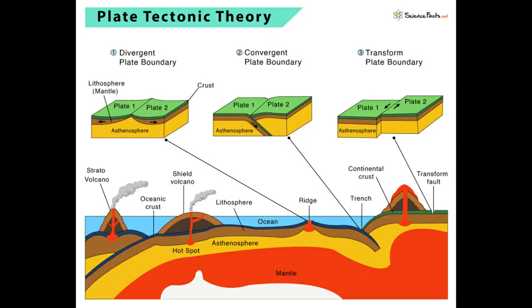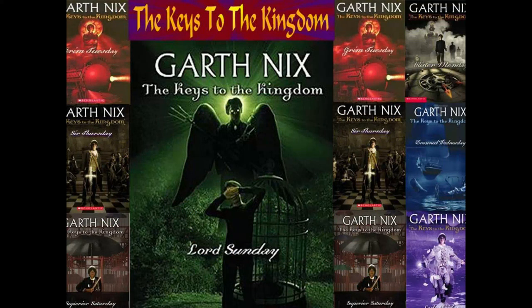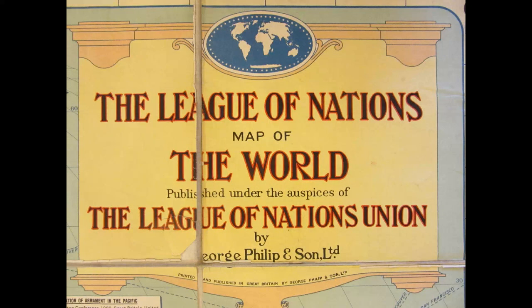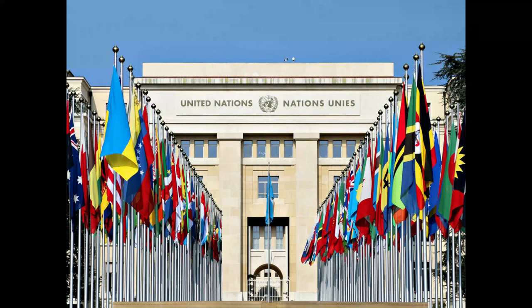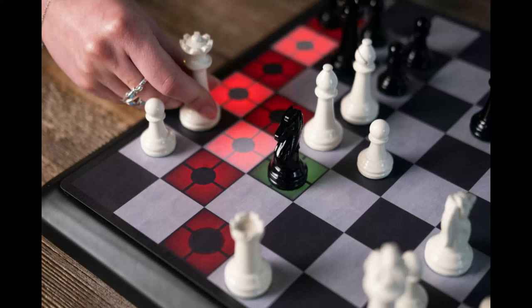This is part of something called the tectonic theory, which in school we are taught has to do with the plates on the earth, but in fact there are many ways the tectonic theory can be applied. This is described in Garth Nix's The Keys to the Kingdom series and can also be found in the League of Nations and United Nations ruling schemes. It takes place when, in a metaphor, you would move the tiles on which chess pieces move rather than the pieces themselves, thus shifting the ground and moving the plates — the idea of tectonic warfare.